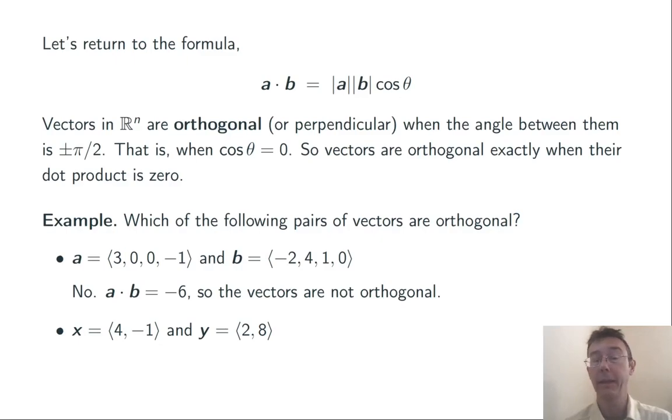x = ⟨4, -1⟩, y = ⟨2, 8⟩. We take the dot product, and we get 0. We get 8 minus 8. So these vectors are orthogonal.